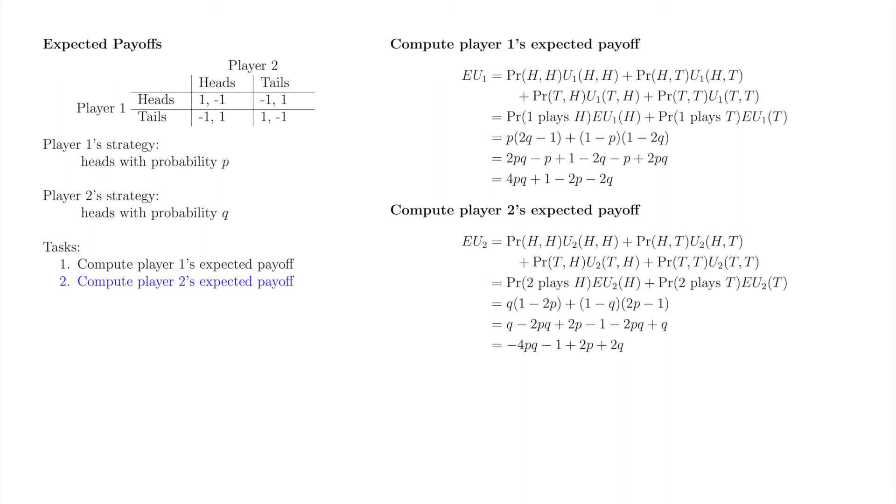Note that player one's and player two's expected payoffs sum to zero. We can be further encouraged that our answers are accurate because the sum of payoffs in each matrix entry is also zero.